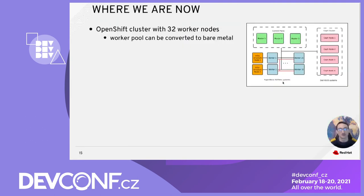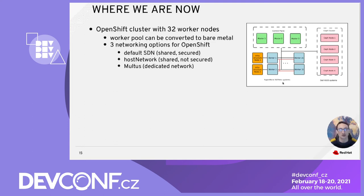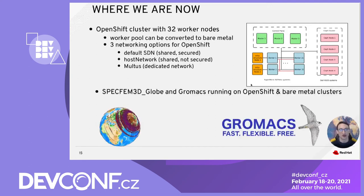Before going in depth into the results, let me summarize where we are. We have an OpenShift cluster with 32 worker nodes that can be converted to bare metal to reuse the same hardware. We have three different network configurations: the default software defined network, which is shared with the rest of OpenShift but secured; the host network flag, which also uses the shared network but without any security; and Multus, which allows us to use a dedicated network. We also have two scientific applications — SPECFEM and GROMAX — that can run on both the OpenShift and bare metal clusters.